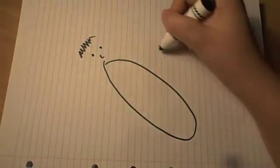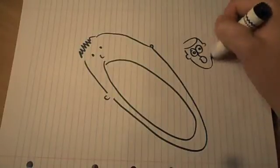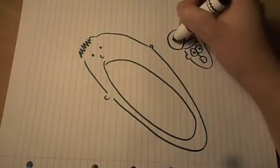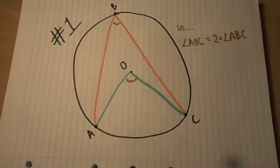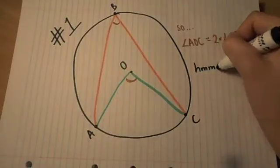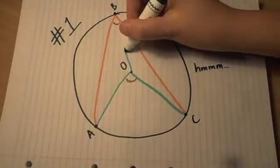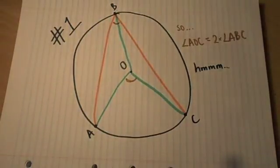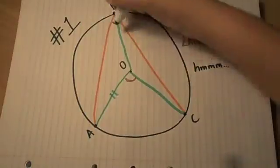Has your jaw dropped to the ground yet? That's pretty crazy, right? Anyway, back to work. Looking at our diagram, how can we prove this? We know that OA is the radius and OC is the radius. Why don't we draw in OB as the radius? Because then we know that OA equals OB equals OC because they're all the radius of the circle, right?